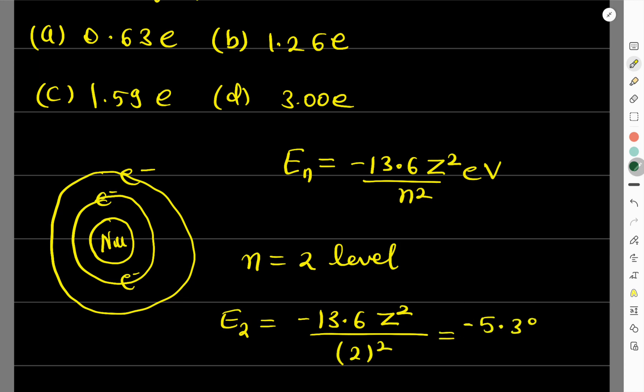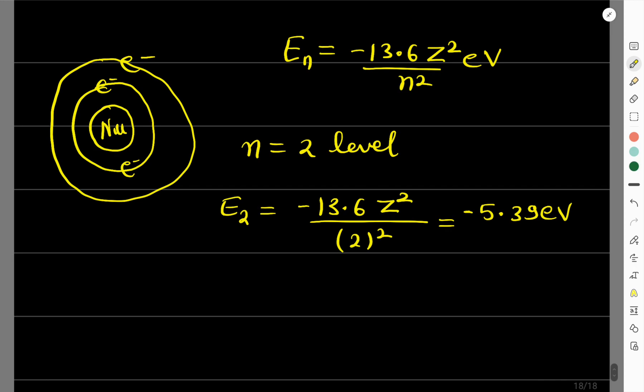Why we are having negative sign? Because this is the ground state energy, bound, boundness, binding energy for this energy level. So from here you can see Z square can be written as 5.39 into 4 upon 13.6. So from here the value of Z square you will get. So Z square will be 1.585. So from here how much will Z be? Root 1.585, then it will be 1.26.